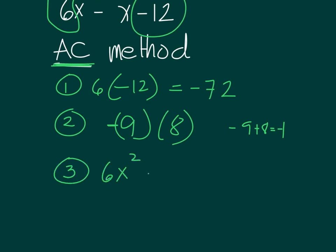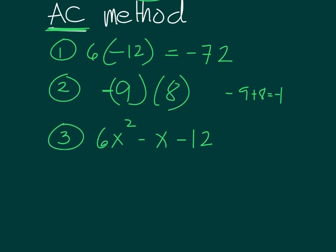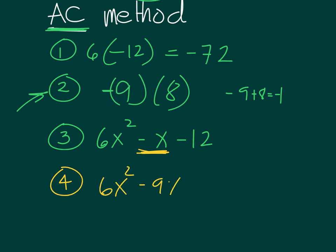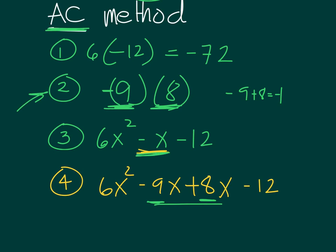This is what you will do after. Note that this is the given expression. This number — negative 9 and positive 8 — is your guide on how to split the negative x. This is how you split the negative x: minus 9x plus 8x, then you have minus 12. Negative 9x plus 8x is actually negative x, so basically they're the same.